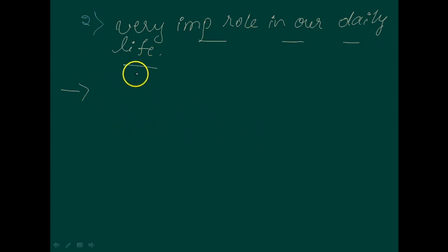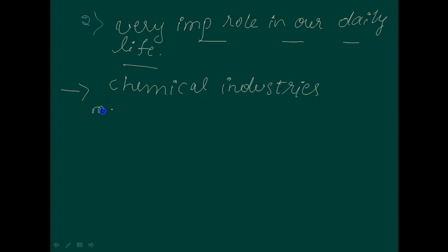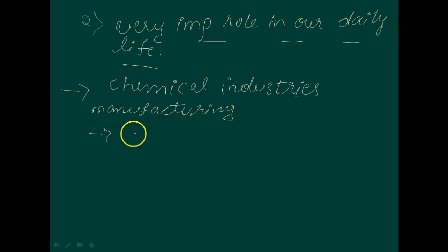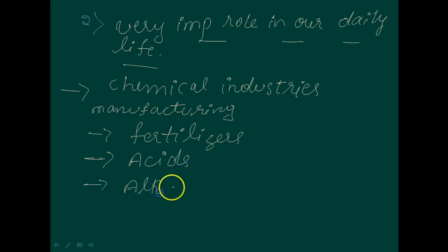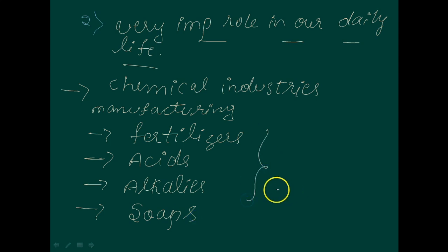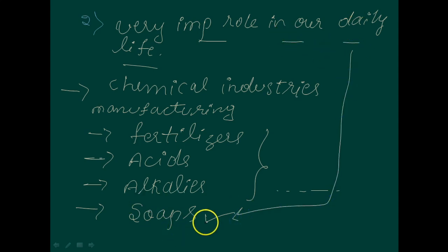Chemical industries are manufacturing fertilizers, acids, alkalis, and soaps, as well as many more items. This is the very important role chemistry plays in our daily life. The good example is soap — we are using soaps in our daily life. So this is a very good example for us.